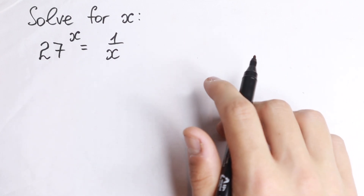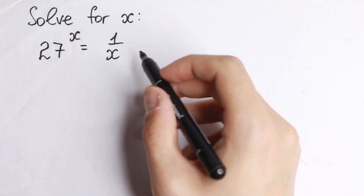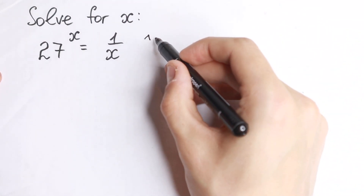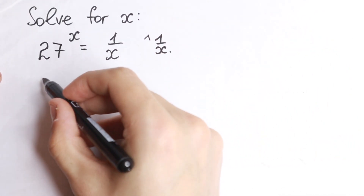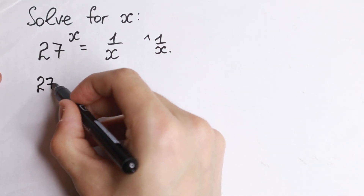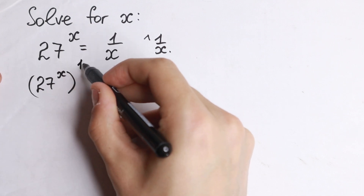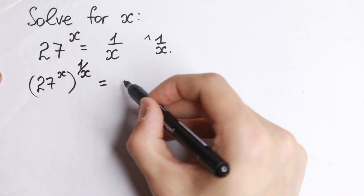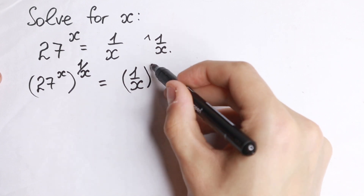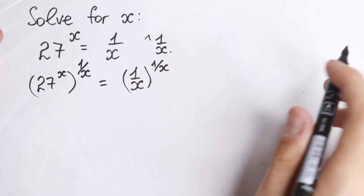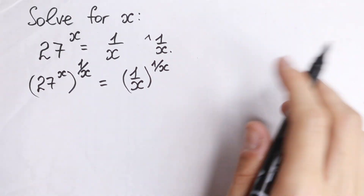First of all, as you can see, we have 27 to the power x, and it's really good to raise both sides to the power 1 over x. If we raise this, we will have 27 to the power x raised to the power 1 over x, and on the right-hand side, 1 over x raised to the power 1 over x. So we just raise both sides to the power 1 over x — nothing hard.